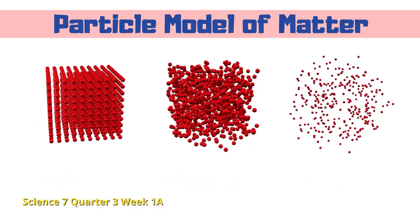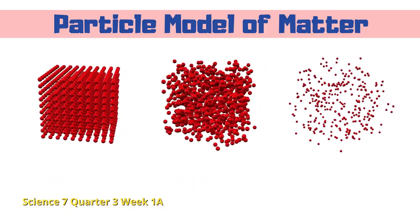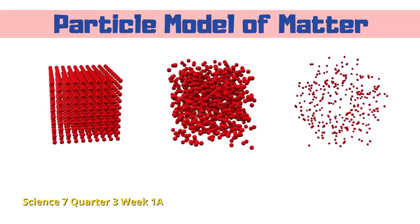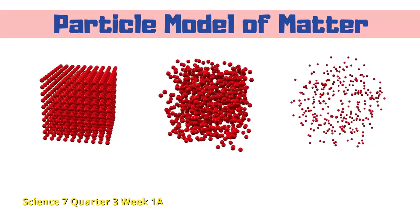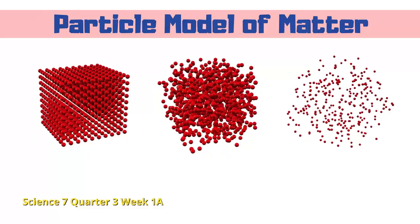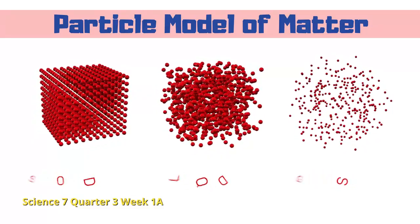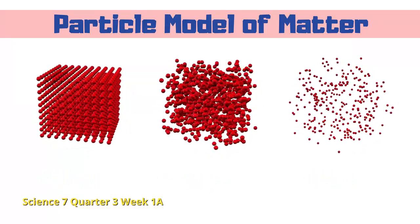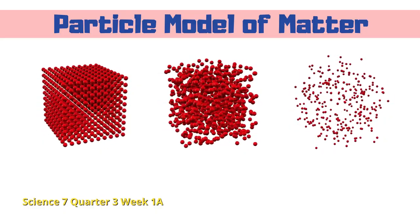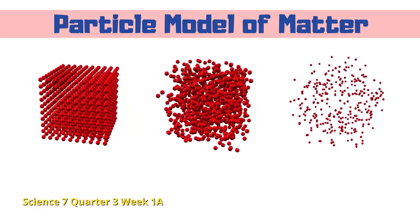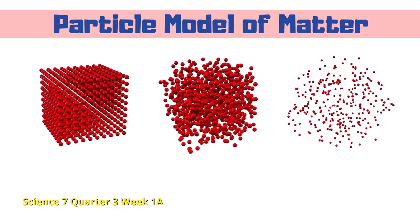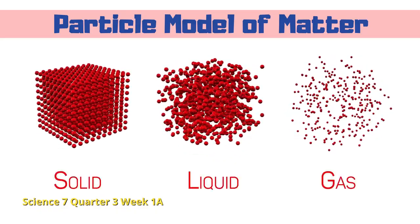Many years later, scientists came back to Democritus' idea and added to it. This theory they developed is called the Particle Model of Matter. There are four main ideas in the particle model: All matter is made up of tiny particles. The particles of matter are always moving. The particles have spaces between them. Adding heat to matter makes the particles move faster.